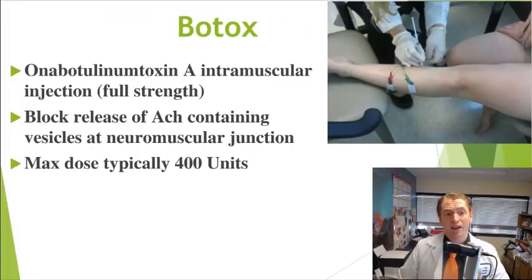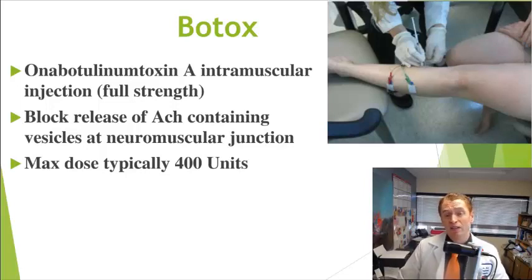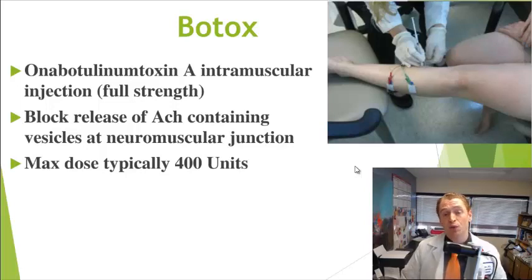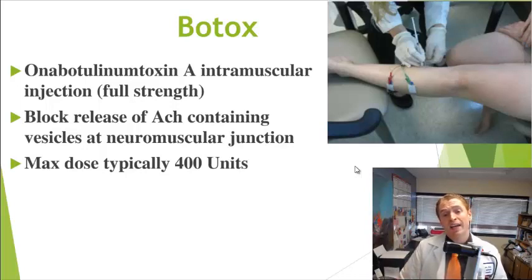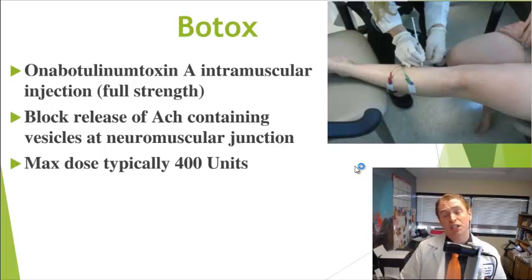For people who have spasticity in particular areas, intramuscular Botox can be effective. Botox is botulinum toxin, which blocks the release of vesicles at the neuromuscular junction containing acetylcholine, which normally causes muscles to contract — so it's a paralytic agent that relaxes muscles. If injected into specific target areas, it can be helpful without significantly impairing function. It's quite helpful in post-stroke spasticity of the upper extremity, and for scissoring gait caused by tight inner thigh muscles, injections into the adductor compartment can help. Injections into the posterior tibialis can also address ankle inversion.